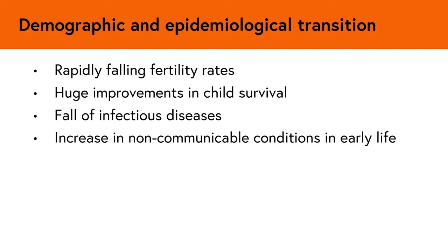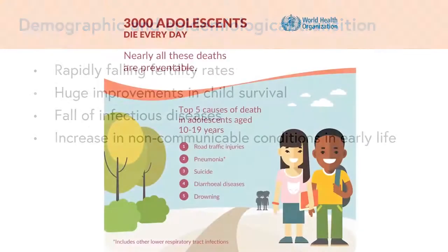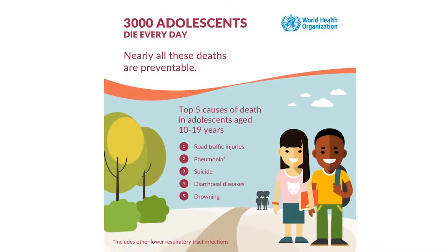So why are these transitions so important? It's because countries have a one-time-only opportunity to invest in a large proportion of the population who are young adults in their most productive years. But to realise this potential dividend, individuals must leave adolescence and enter adulthood healthy, well-educated, and employed. To ensure that these healthy transitions happen, we have to understand what the health priorities in adolescence are.